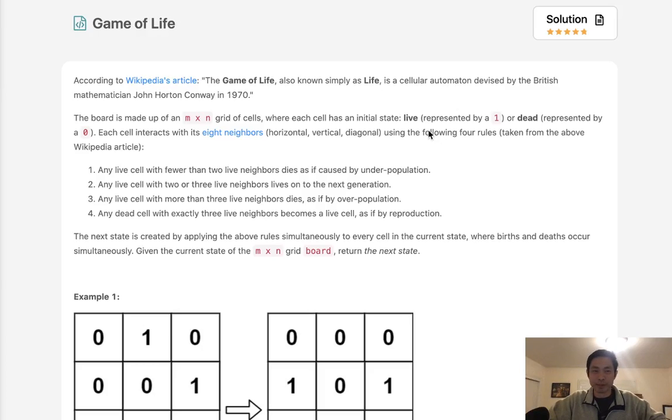Welcome to December's League Code Challenge. This problem is called Game of Life. According to the Wikipedia's article, the Game of Life, also known simply as Life, is a cellular automation device by the British mathematician John Horton Conway in 1970.